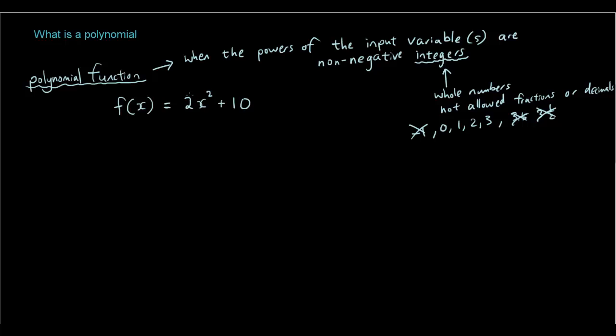And there is no limit on the coefficient of the variables, so the two here which we call coefficients. Coefficients can be real. So real just means any sort of number really. You can have integers, you can have negatives, you can have decimals, you can have fractions.